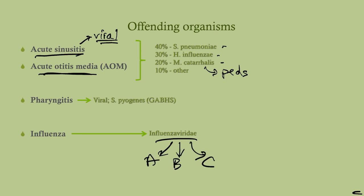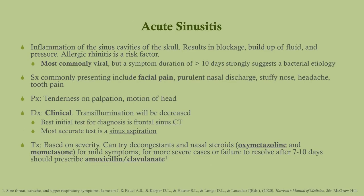Acute sinusitis is inflammation of the sinus cavities of the skull — the little air pockets within your skull bones. Any blockage, say from allergies causing a stuffy nose, can be a risk factor. Proximal to a blockage you get fluid buildup, pressure, and pain. If an infection develops the pain gets really bad. Most commonly it's viral; however, if symptoms persist more than 10 days, that strongly suggests a bacterial etiology.